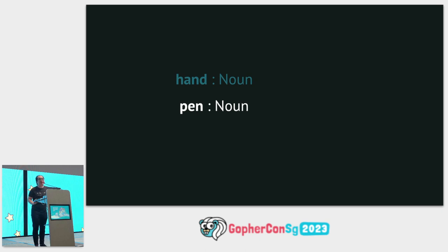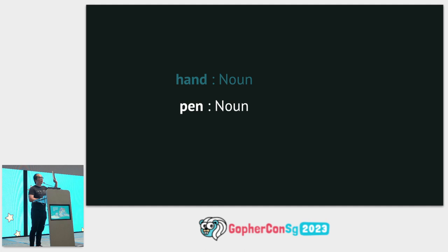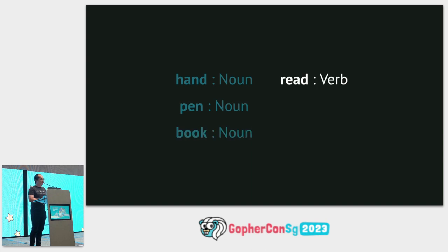Actually, I do need that book. This book is for me to read, and read is a verb. This is my book too — this book is for me to write, and write is also a verb.